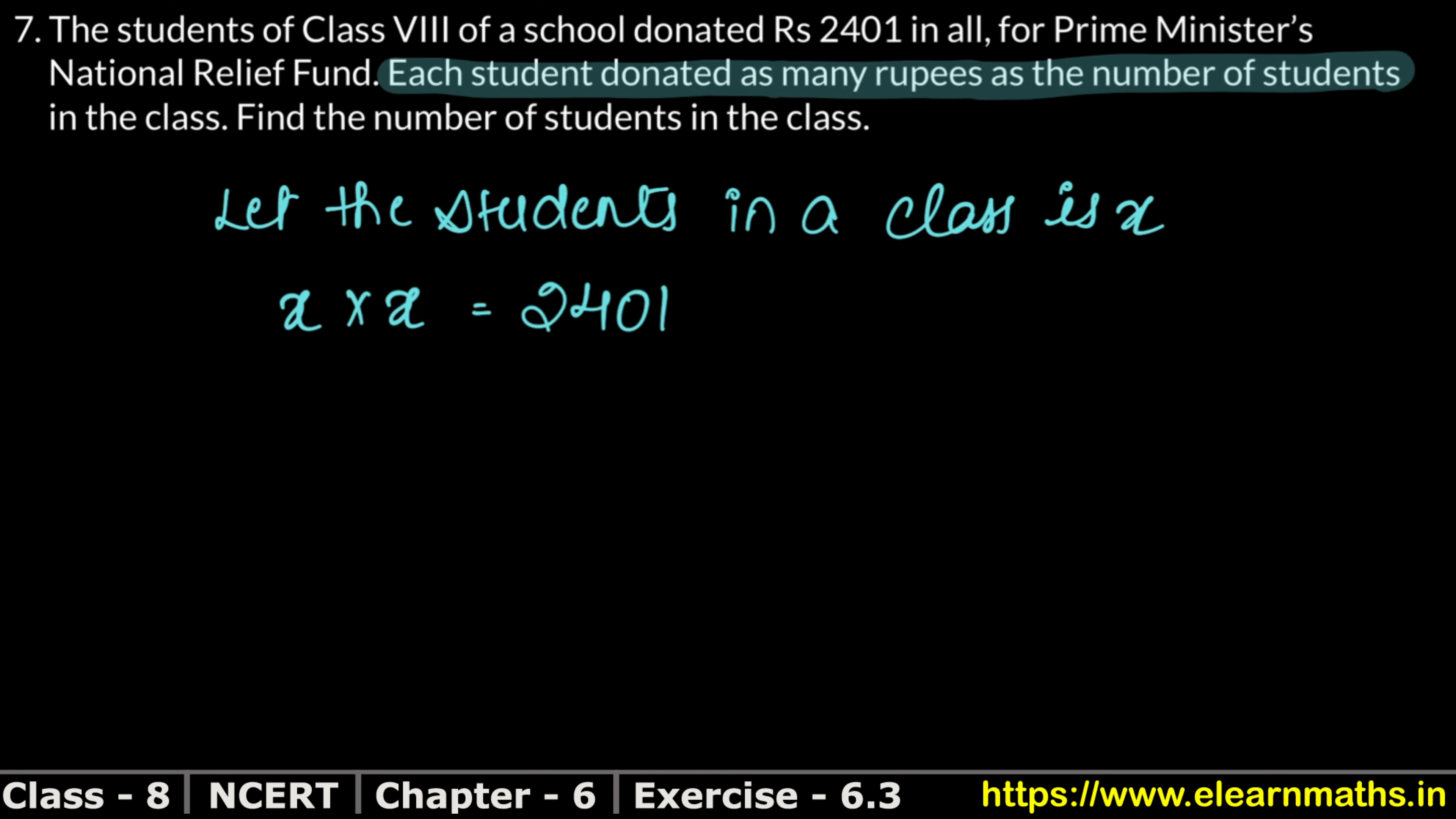So x into x is x square. Why? The power is 1 and the power is 1, so the power is added in multiply. 1 plus 1 is 2, equals to 2401.